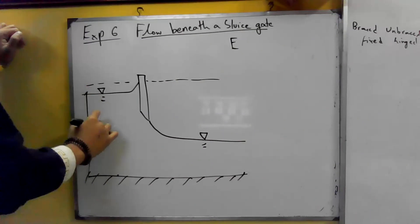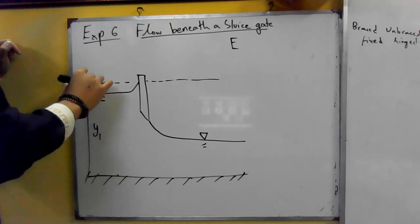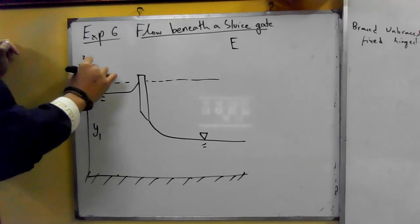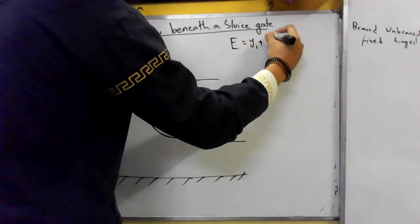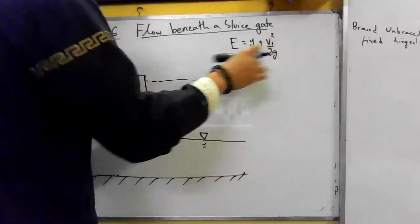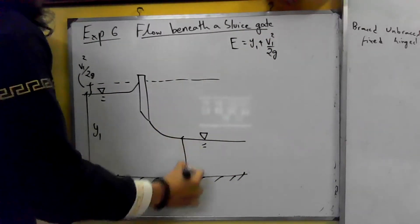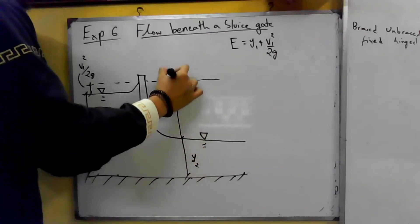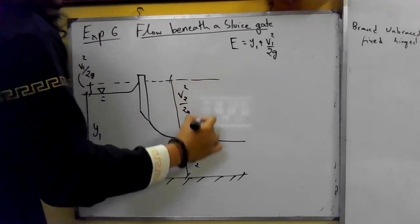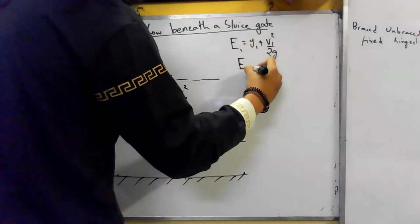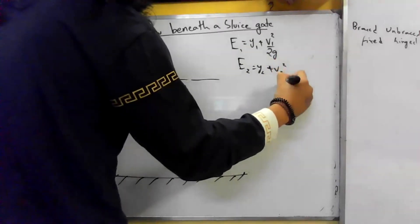We get the velocity here. E1 equals y1 plus v1 squared divided by 2g. This is a very important equation to note. Similarly, E2 equals y2 plus v2 squared divided by 2g.